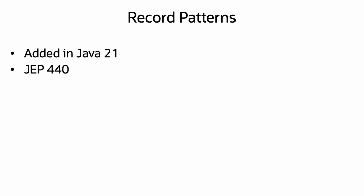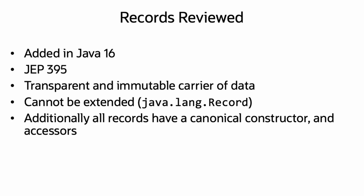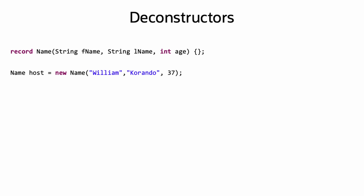Record Patterns were added as a final feature in Java 21 with JEP 440. Records were initially added in Java 16 with JEP 395. They are transparent and immutable carriers of data, they cannot be extended, and additionally all records have a canonical constructor and accessors. These constraints and features made records an ideal candidate for the addition of deconstructors.